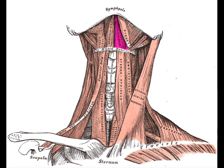It arises from the whole length of the mylohyoid line of the mandible, extending from the symphysis in front to the last molar tooth behind. The posterior fibers pass forward to insert into the body of the hyoid bone.